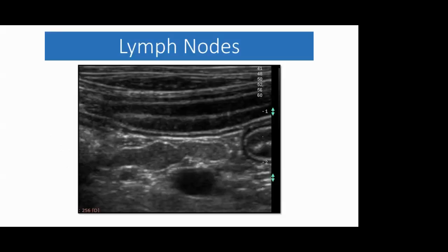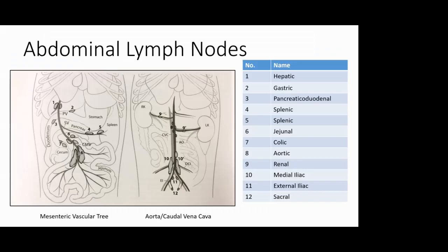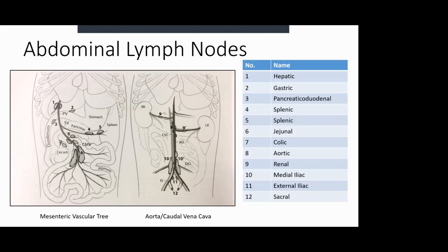If we start with the abdominal lymph nodes, we tend to find them clustered around the vascular trees, the blood vessels. So we tend to find abdominal lymph nodes around the mesenteric vascular tree, up to the portal vein, or clustered around the aorta and the caudal vena cava. From the list on the right, there's a whole host of different lymph nodes that you can find in the abdomen.